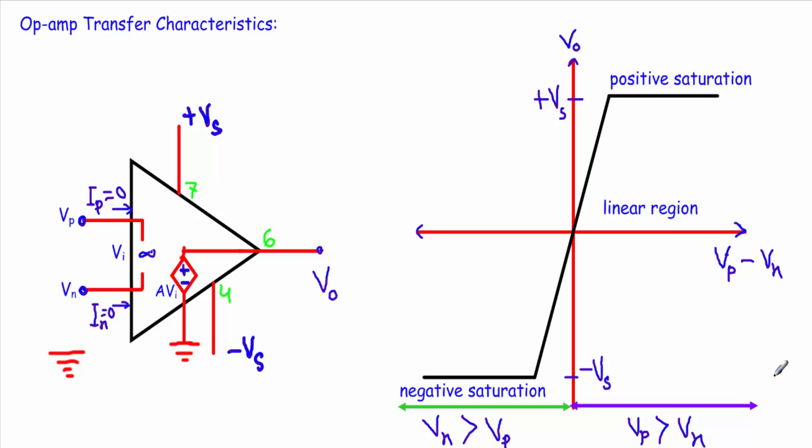In this video I will talk about the transfer characteristics of an operational amplifier. Transfer characteristics show how the change in input affects the output, or how the output changes with respect to any change in input.